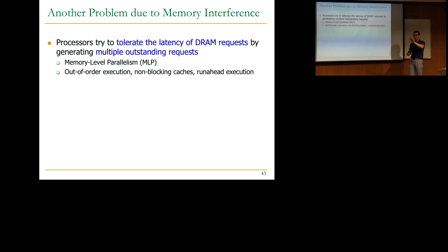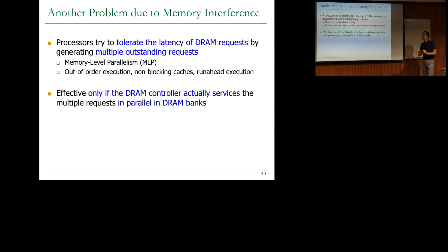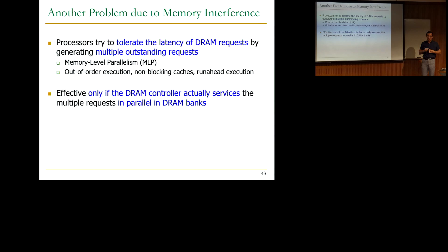Basically, you put a lot of infrastructure so that whenever you get a long-latency cache miss, you overlap that latency with other cache misses such that the cost is amortized. That's the idea of memory level parallelism — you stall only once for many cache misses approximately, as opposed to once for a single cache miss. But these techniques are effective only if the DRAM controller actually services those multiple requests in parallel in different DRAM banks.